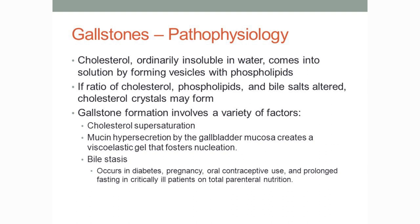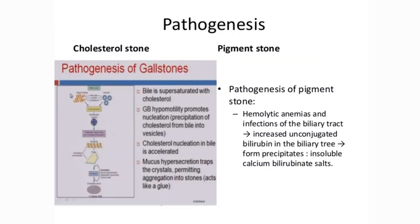When the bile is soluble, it forms a strong solution. When the bile salt is low, it forms a stone. Secondly, the pigment stone — the bile pigment is a result of hemolysis.